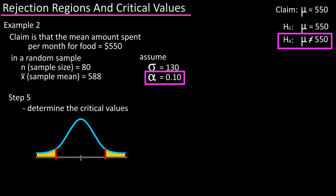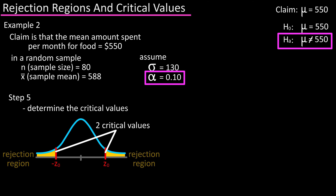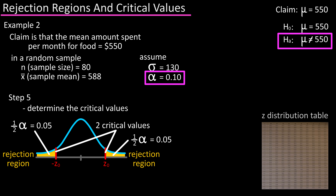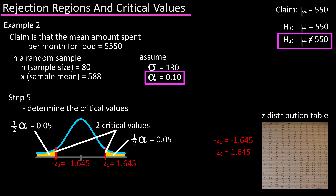Step five: determine the critical values. Since this is a two-tailed test, there will be two critical values — negative z-naught and positive z-naught — with both shaded areas in the tails being rejection regions. Since alpha equals 0.10 and this is a two-tailed test, each rejection region will be one-half of alpha, which is 0.05.